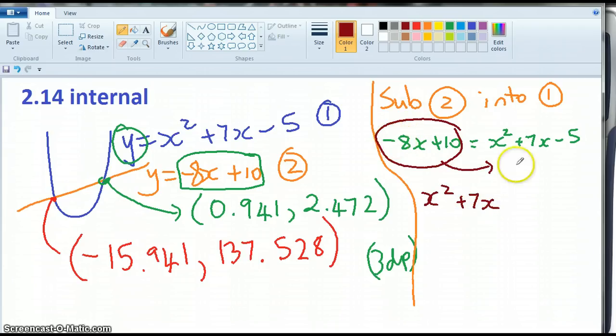The minus 8x becomes plus 8x on the other side, minus 5, and the plus 10 becomes minus 10. And that all equals 0. So simplifying, I've got x squared plus 15x minus 15 equals 0.